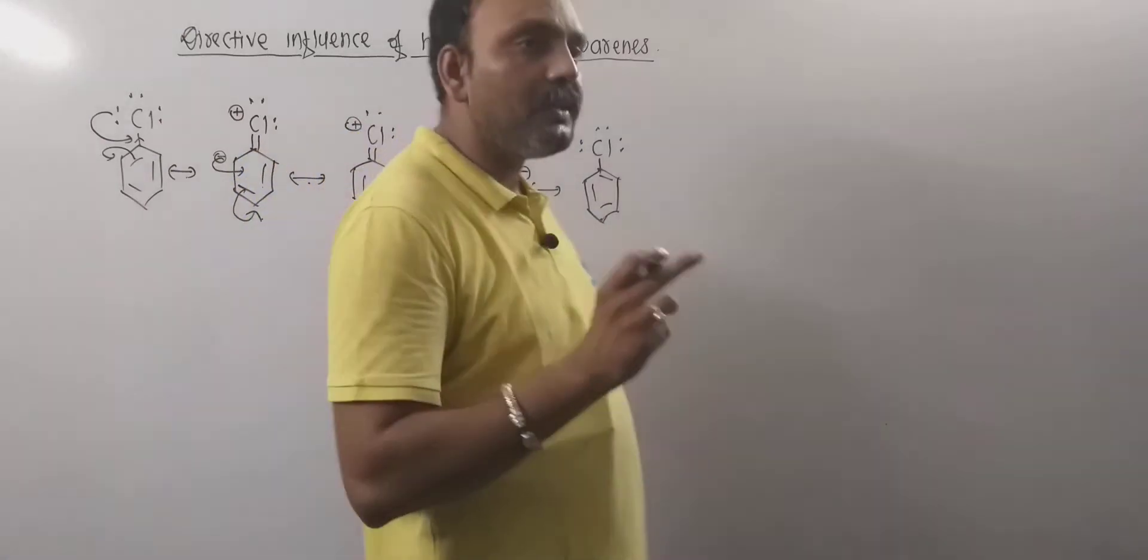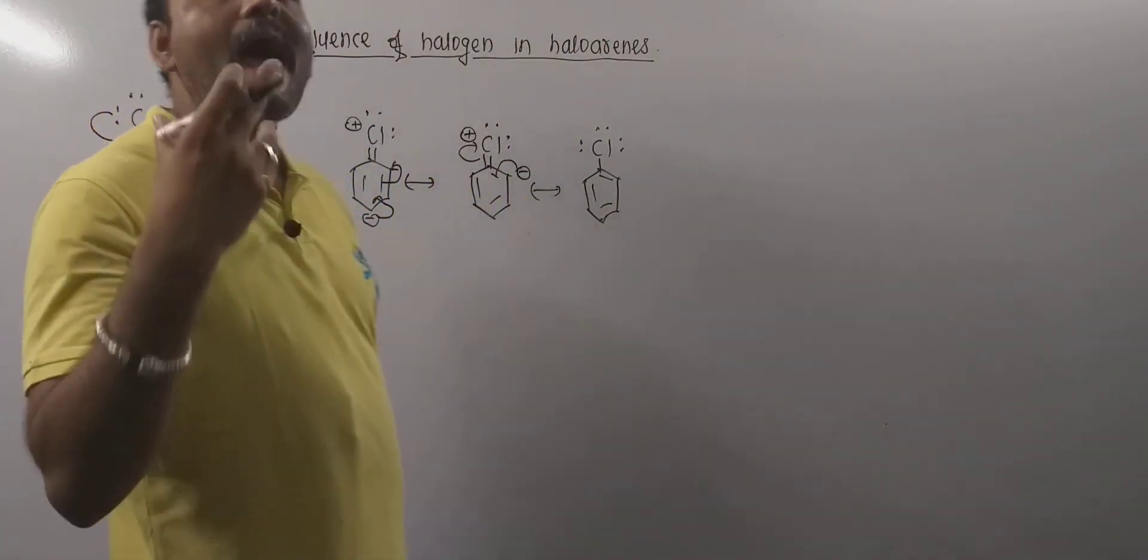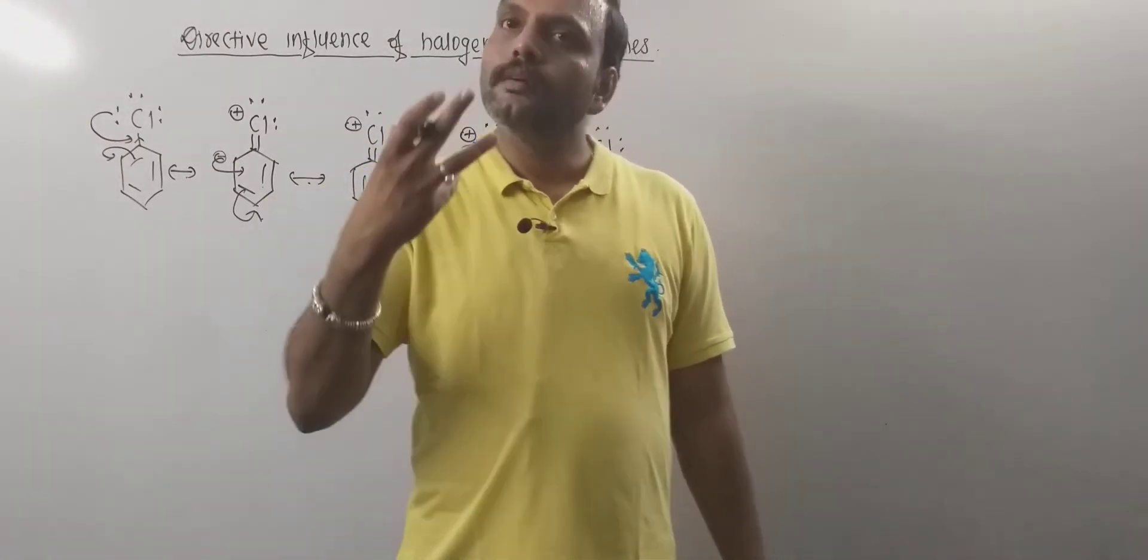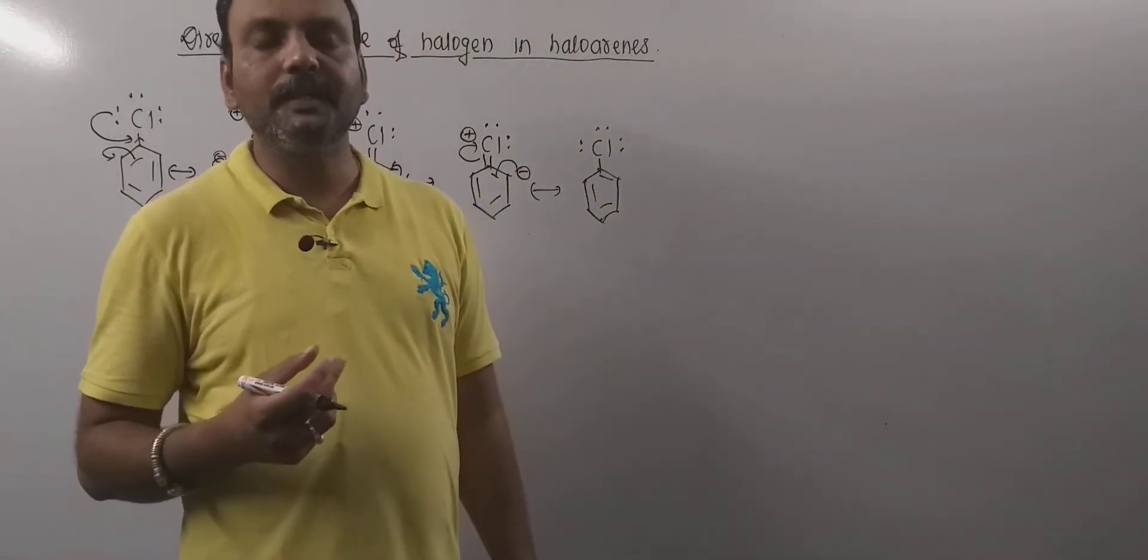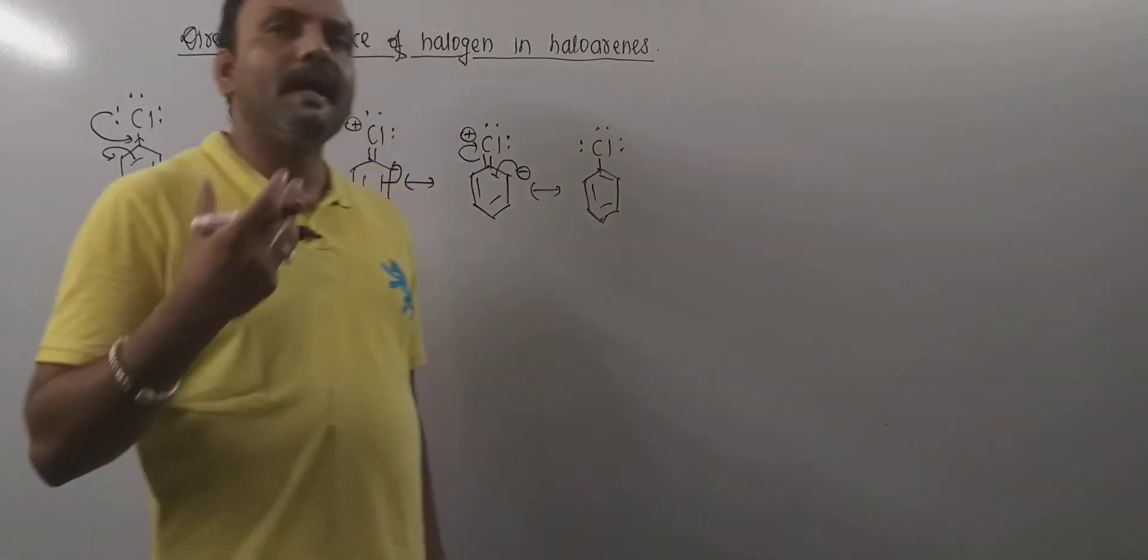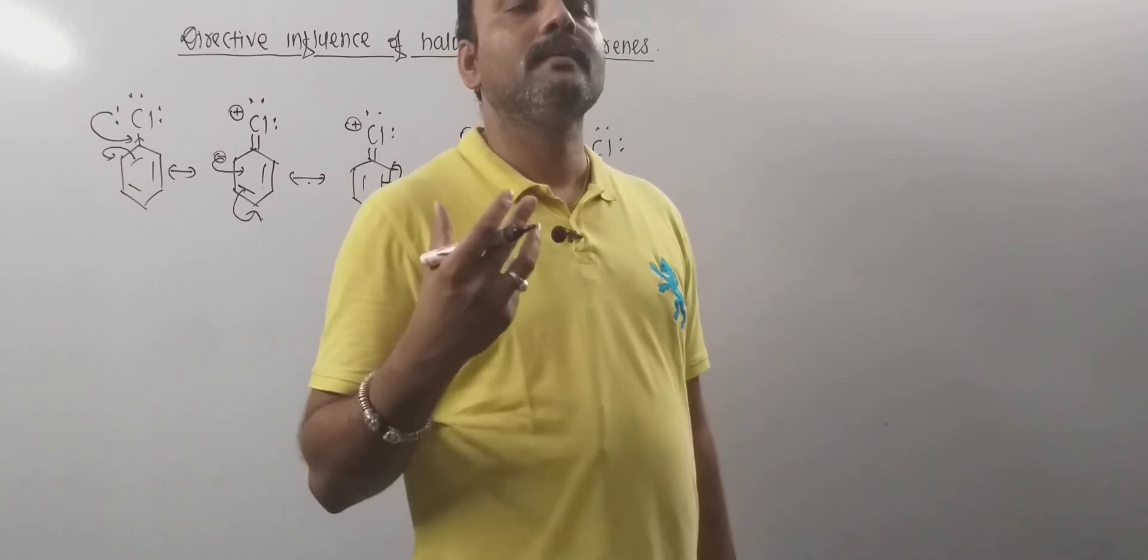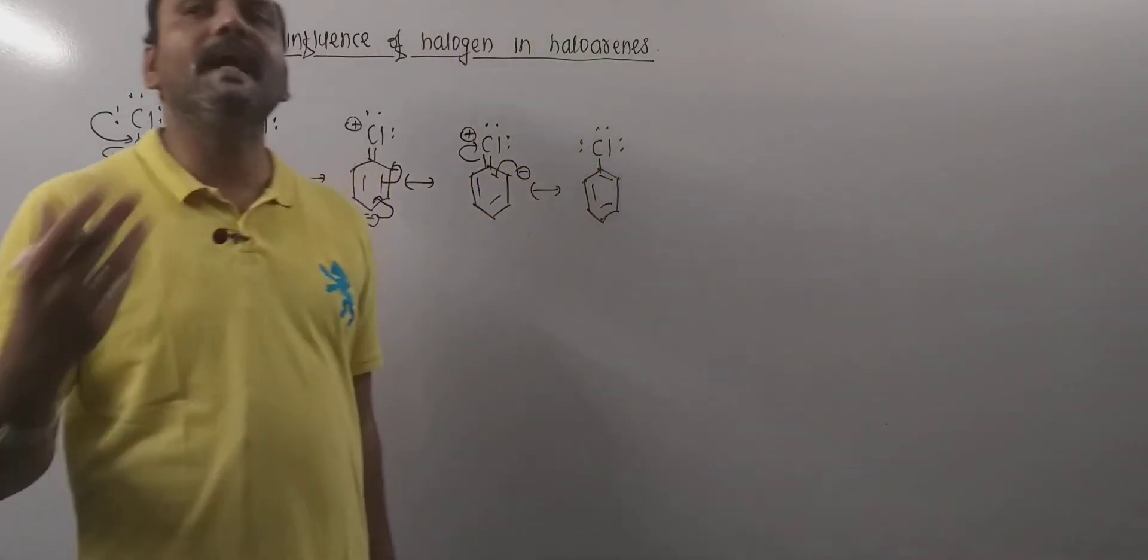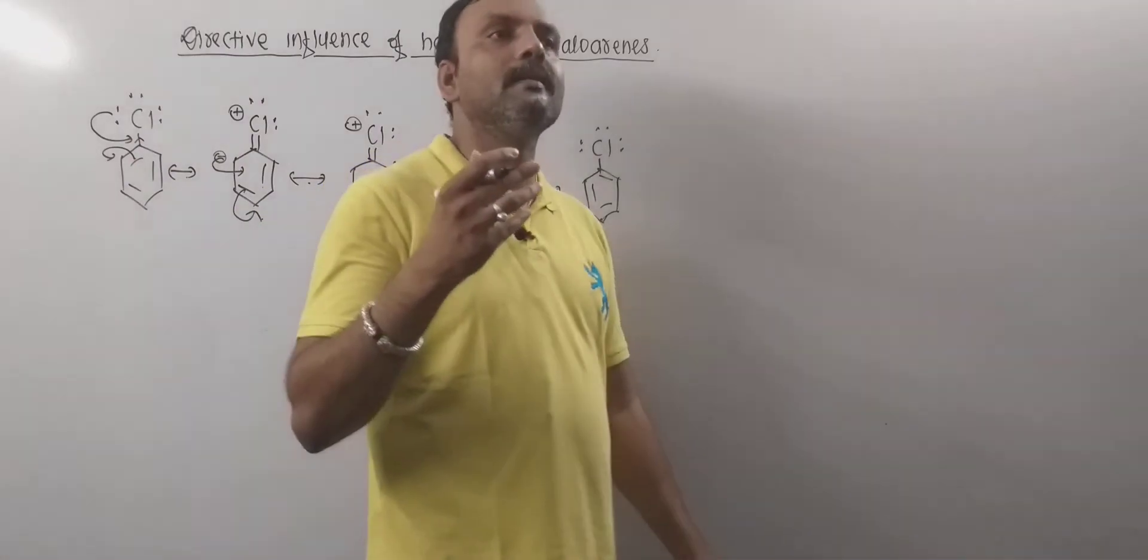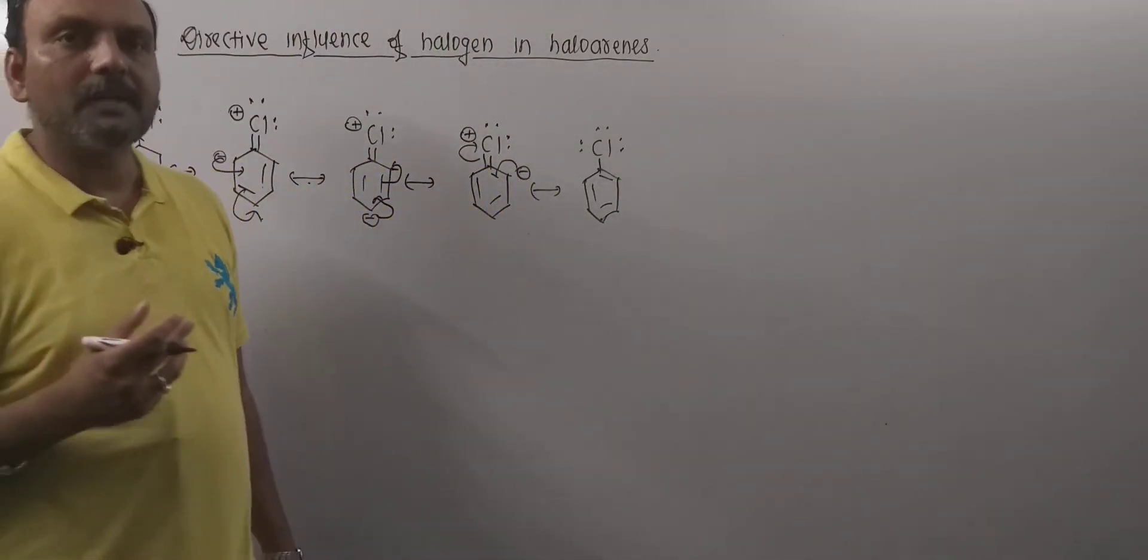Thus, haloarenes, especially for example chlorobenzene or halobenzene gives electrophilic substitution and probably the ortho and para positions are ready for the attack and those positions will get attacked by electrophile, I mean approaching electrophile if any. Thank you very much.